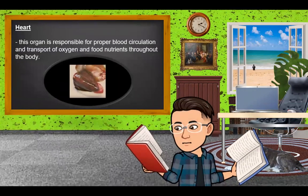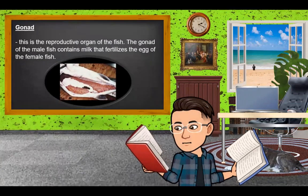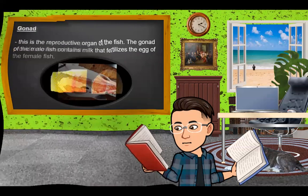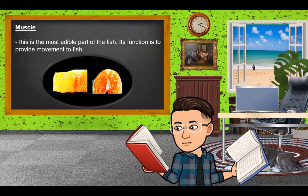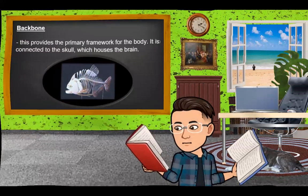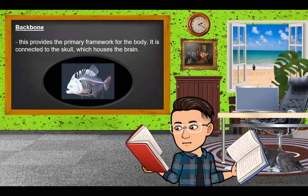The heart is an organ responsible for proper blood circulation and transport of oxygen and food nutrients throughout the body of the fish. The gonad is the reproductive organ of the fish — the gonad of the male fish contains milt that fertilizes the egg of the female fish. The muscle is the most edible part of the fish, and its function is to provide movement. Lastly, the backbone provides the primary framework for the body and is connected to the skull, which houses the brain.